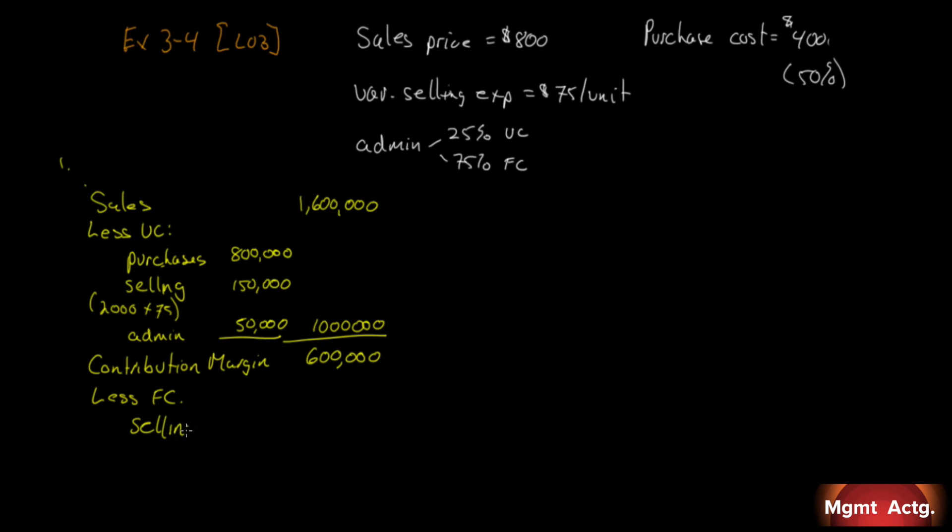So if $150,000 was variable and the total was $400,000, that means we must have a fixed component to selling of $250,000. We have a fixed component of admin - it was $200,000. We expensed $50,000 as variable, so the other $150,000 must be fixed. That gives us $400,000, so we end up with $200,000 in operating profit.